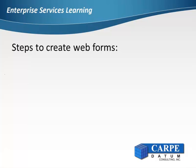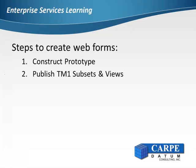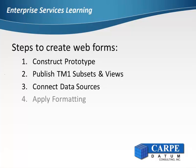Creating forms involves five basic steps. First, we create a prototype in InfoPath that will allow us to visualize and confirm the operation of a form. Next, we use enterprise services to publish TM1 views and subsets that will provide the data for the form controls. Once the views and subsets are published, we can incorporate them into our form as data sources and connect them to the controls we created earlier. Formatting is then applied to the form and finally it can be published as HTML web pages using forms services.